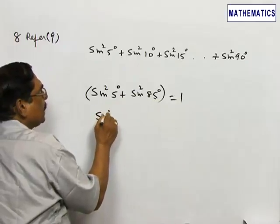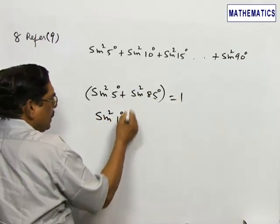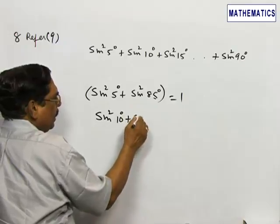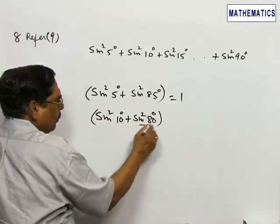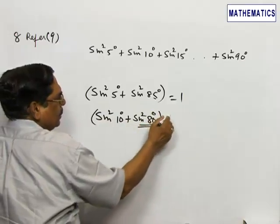I will combine sine squared 10 degrees plus sine squared 80 degrees, and this also will be cos squared 10 degrees, which is equal to 1.